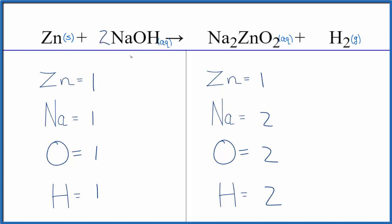Put a two in front of the sodium hydroxide. One times two gives us two sodium, one times two gives us two oxygens, and the hydrogen one times two gives two of those. For the zinc, we have one zinc on each side, so that's good. This is the balanced equation.